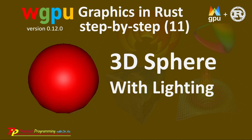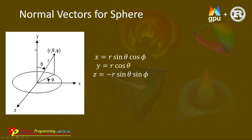To do this, we need to use a spherical coordinate system, as shown here. Here shows the formula for X, Y, and Z related to the radius R, theta, and phi in the spherical coordinate system. Using these relations: X equals R sine theta cosine phi, Y equals R cosine theta, Z equals minus R sine theta sine phi.